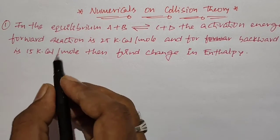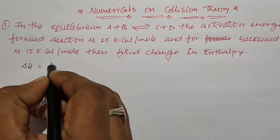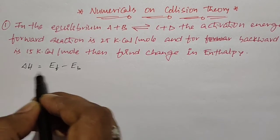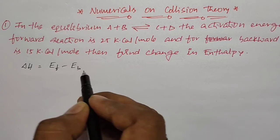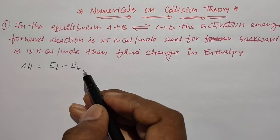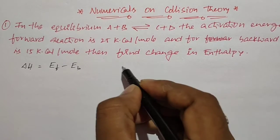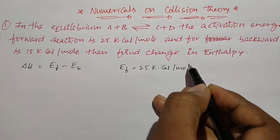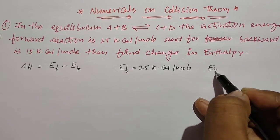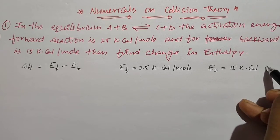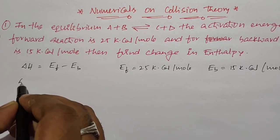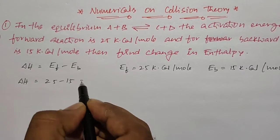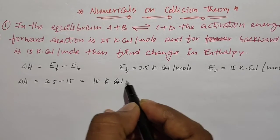In this situation, the formula is ΔH = Ef − Eb. Here ΔH means change in enthalpy, Ef means activation energy for forward reaction, and Eb means activation energy for backward reaction. So here Ef is given as 25 kilocalories per mole and Eb is given as 15 kilocalories per mole. Then ΔH = 25 − 15, that is equal to 10 kilocalories per mole.